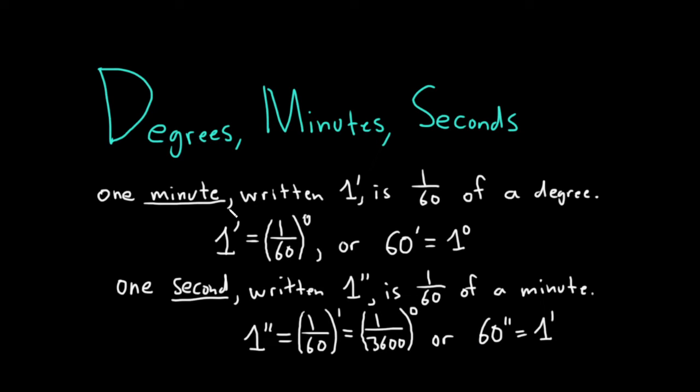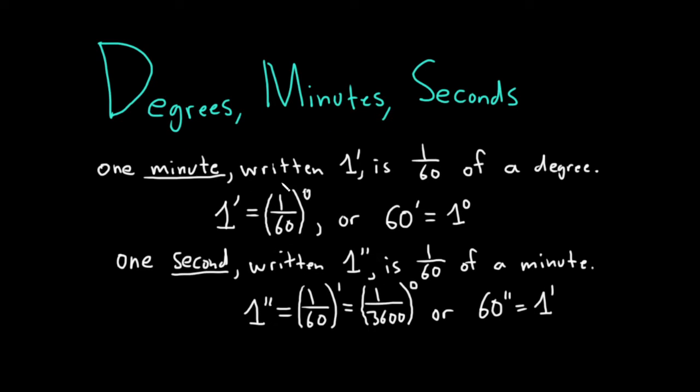So what's written on the screen might look a little confusing, and I think people often have a hard time with this. But try to think of it like this. 60 seconds makes a minute. 60 minutes make a degree. So just like time, right? 60 seconds make a minute. 60 minutes make an hour. Except we don't call them hours. We call them degrees.